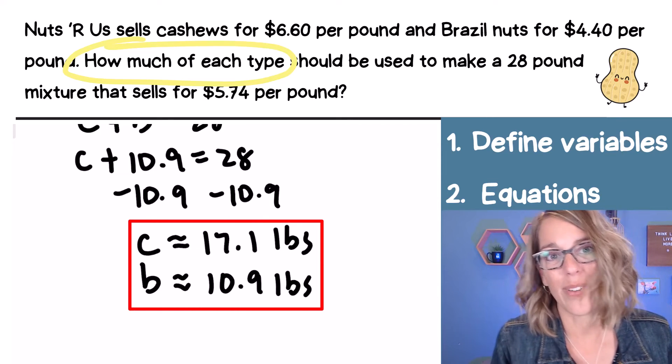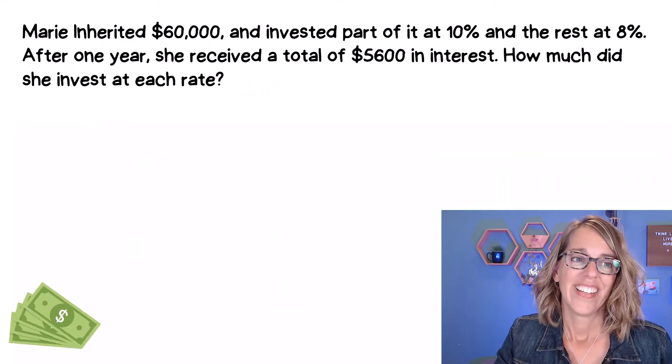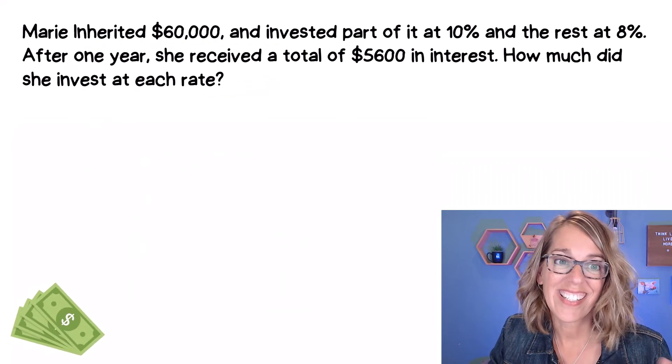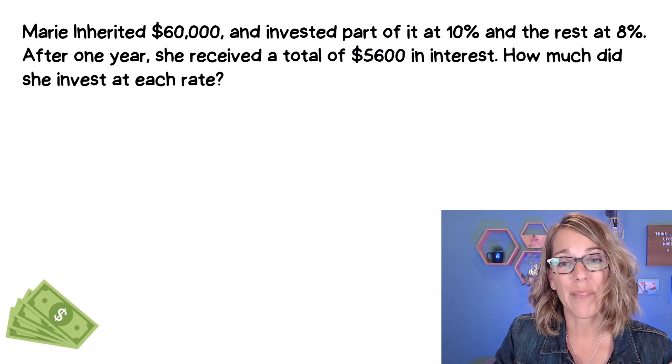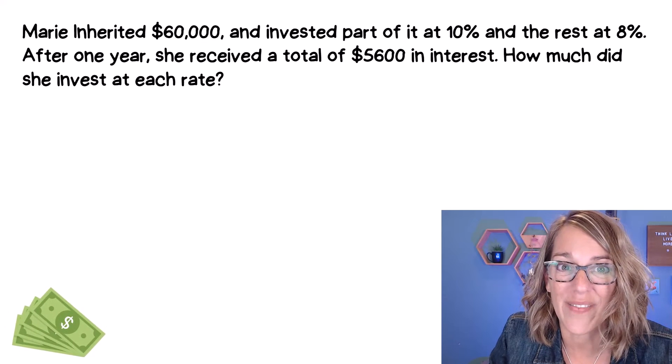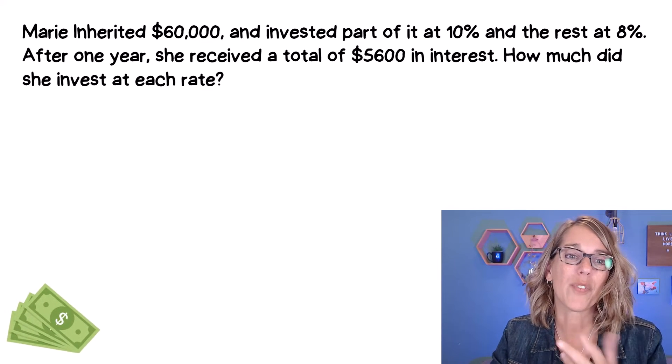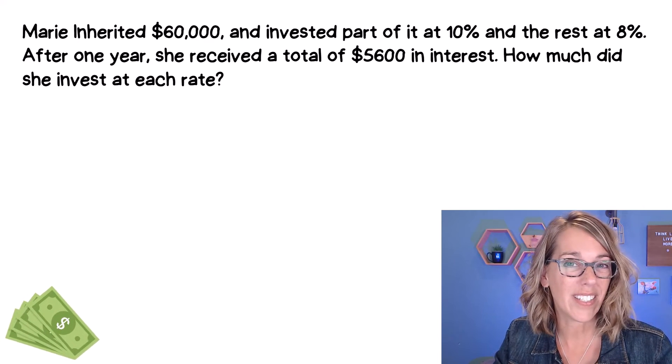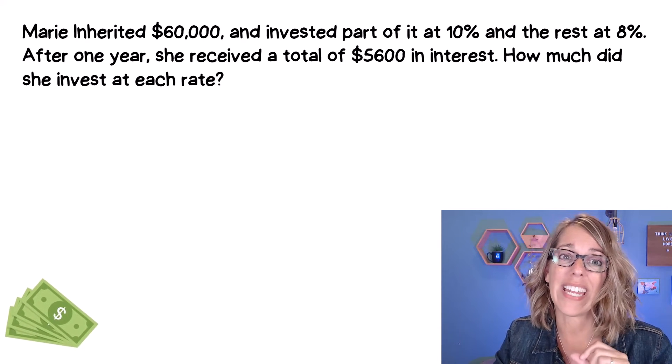Now we haven't yet done one with interest. Here comes our interest example. In this one, Marie has inherited $60,000. Wouldn't that be super nice and invested part of it at 10% and the rest at 8%. Now, honestly, the first question you should ask is why not invest all of it at 10%? Sure. She has a good reason, but after one year, she's got $5,600 in interest. Not too bad. How much did she invest at each rate?